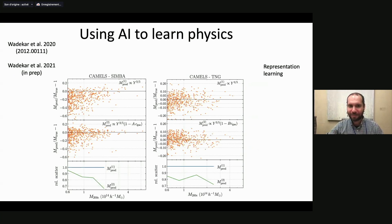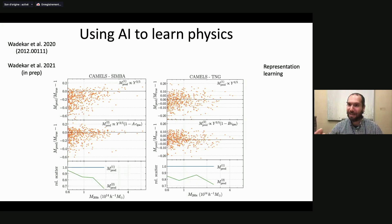Jay, now a postdoc at the IAS in Princeton, has been using machine learning and symbolic regression to improve the Y-N relationship. He found an equation where measuring the gas concentration reduces scatter in this relation by almost 30%. This was tested with CAMELS and works for different cosmologies, different astrophysics, and different subgrid models — suggesting it is something genuinely physical, which motivates us to understand why.